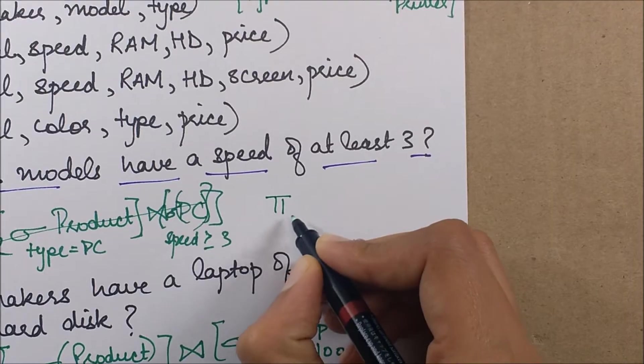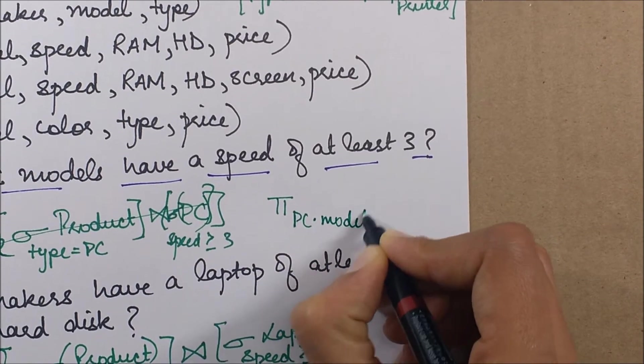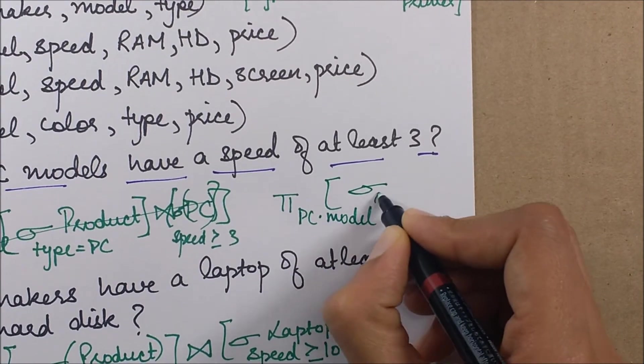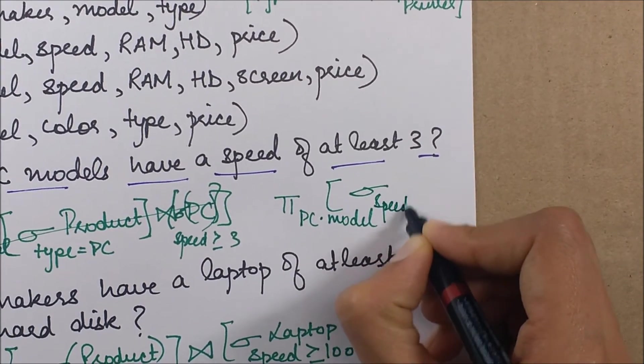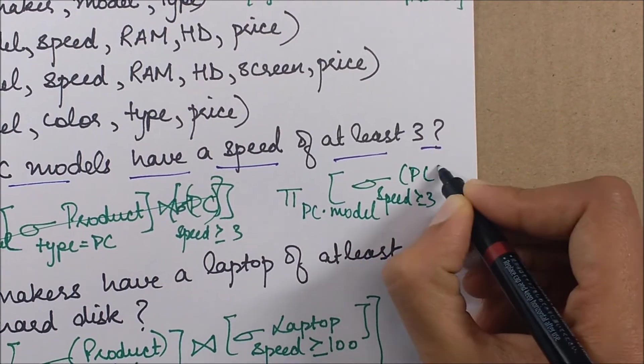So in this case the query will be simplified to just this. Just project the model numbers of PCs where we have the speed of PCs greater than or equal to three. That's all.